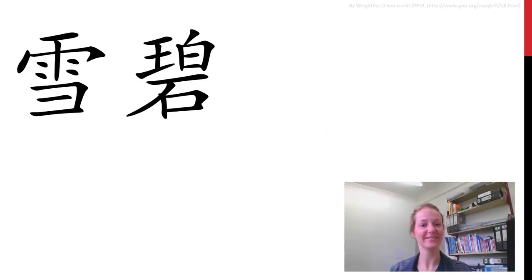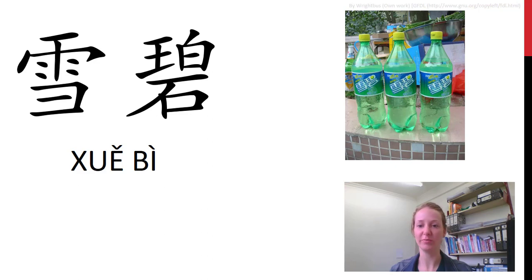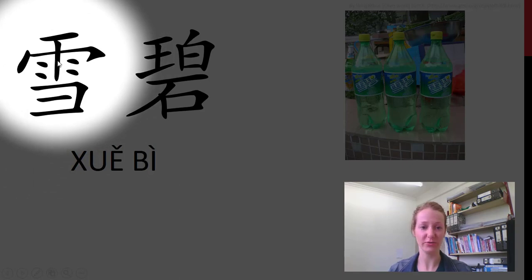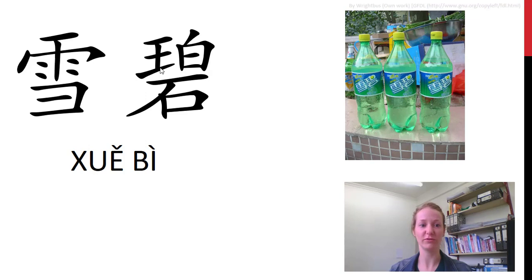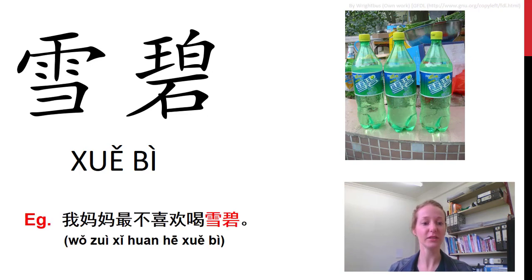下一个. 这是什么? 你知道吗? 这是雪碧. Sprite. It has an interesting character — we've got 雪, which is snow, and 碧, which is jade. Maybe you think of Sprite when it's frozen, it looks a little like snow, and the bottle is a jade colour. That's how they came up with that. 我妈妈最不喜欢喝雪碧.